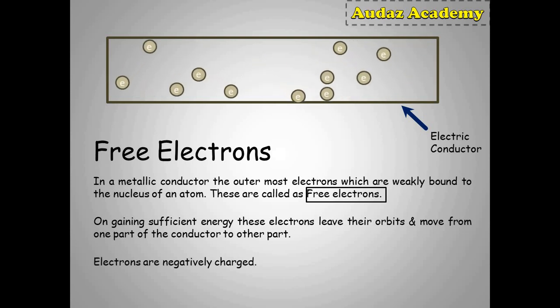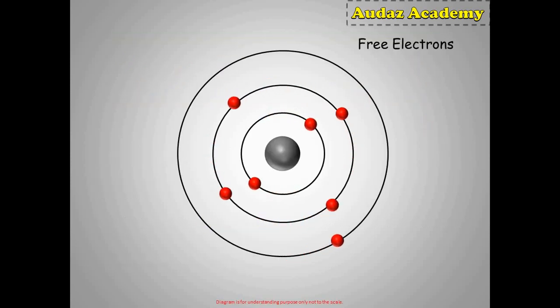These electrons are negatively charged and act as a negative charge carrier from one point to another. You can clearly see the structure of an atom in which the electron in the valence shell gains sufficient energy to come out of the orbit and create a vacancy inside that orbit. Or we can simply say a vacancy is created in the valence shell.